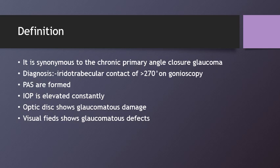The plateau iris mechanism is also called angle closure glaucoma without pupillary block. In this condition, anterior insertion of the iris on the ciliary body, or anterior displacement of the ciliary body, causes apposition of the peripheral iris with the trabecular meshwork, resulting in plateau iris configuration.